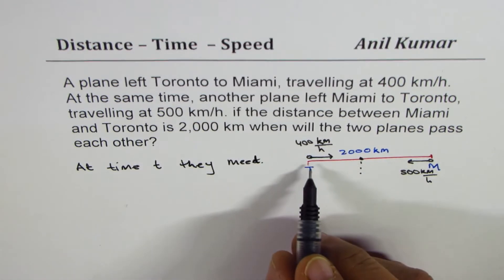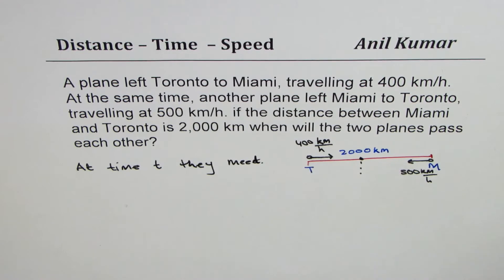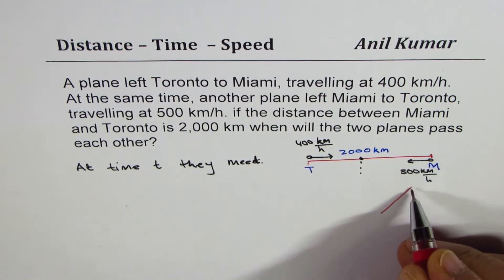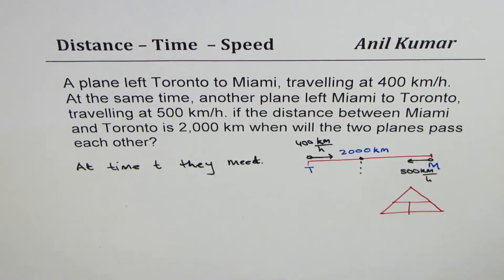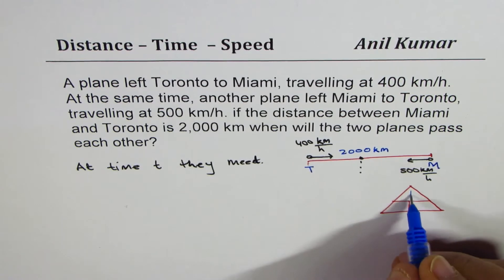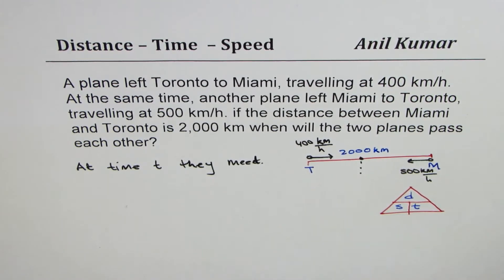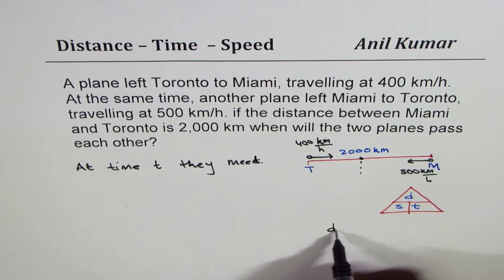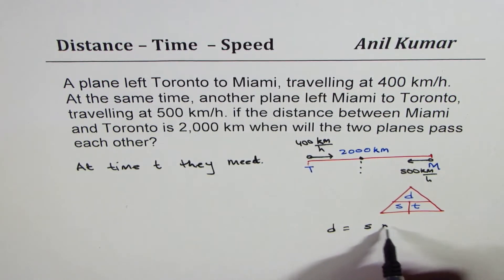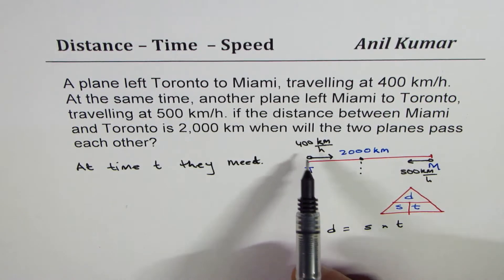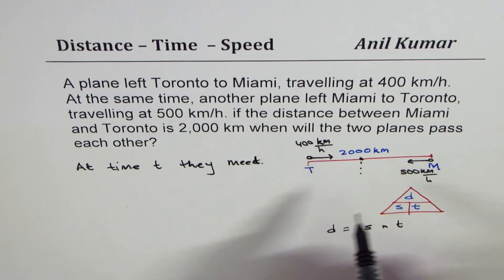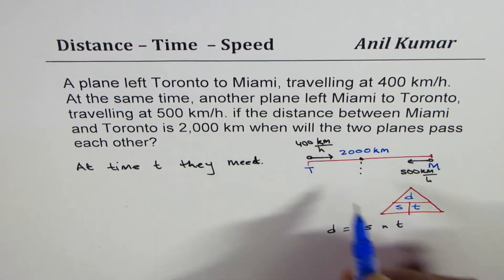How much distance would they cover in time t? We can always find distance with the help of the triangle which relates distance, speed, and time. Distance is speed multiplied by time. Since the speed of the plane from Toronto is 400, it will cover a distance of 400t.